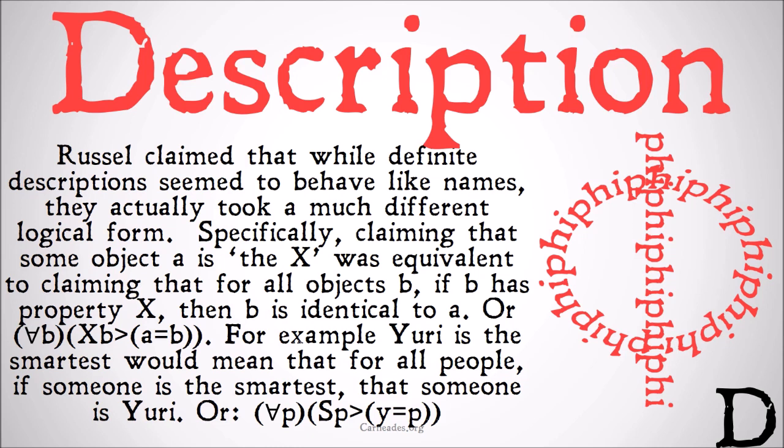Or in other words, for all A, B has X implies that A is identical to B. For example, 'Yuri is the smartest' would mean that for all people, if someone is the smartest, that someone is Yuri — or for all people, if a person is the smartest, that implies that Yuri equals that person.